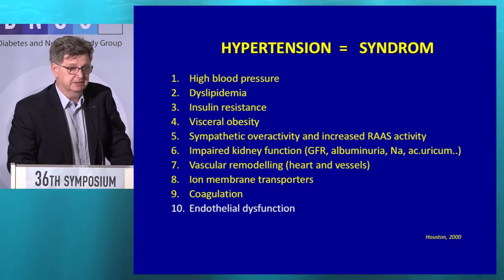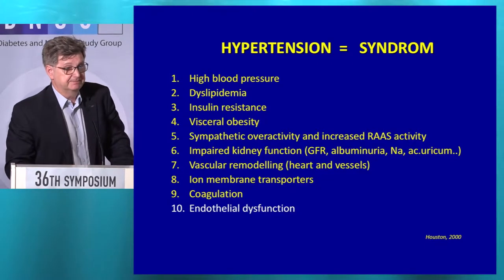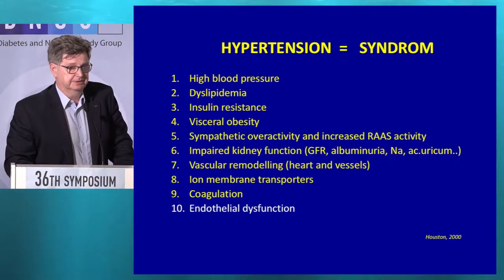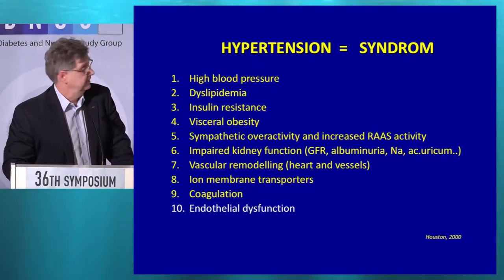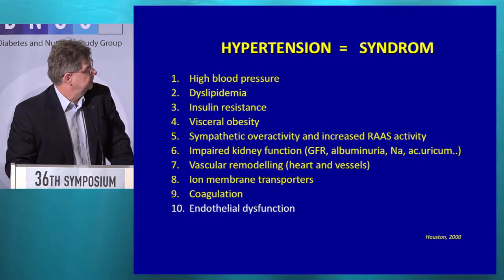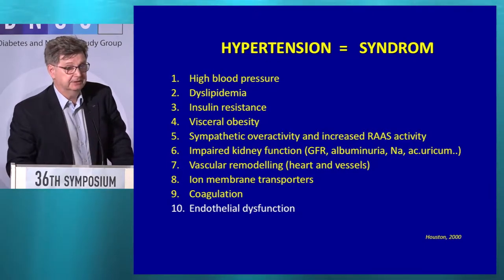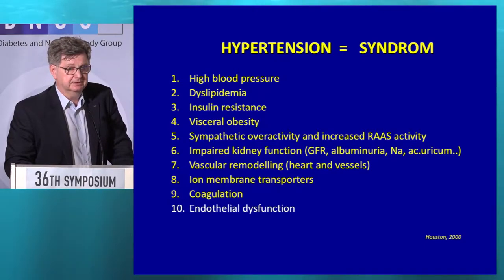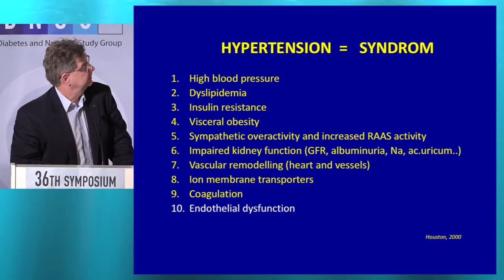We know the mechanisms of hypertension related to visceral obesity, and we know how this might be prevented and how it should be treated. Then there is sympathetic overactivity and increased renin-angiotensin-aldosterone system activity, impaired kidney function — that means slightly decreased GFR and increased albuminuria — all contributing to increased cardiovascular risk. There is also vascular remodeling, defects in iron membrane transport, defects in coagulation, and endothelial dysfunction — which is the topic of my talk. I will speak about how endothelial dysfunction could be improved and how we can prevent the onset of hypertension.